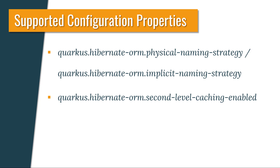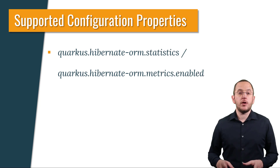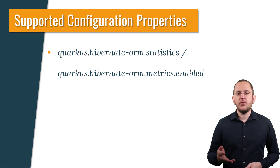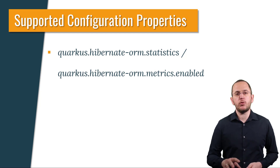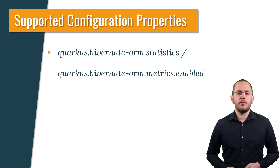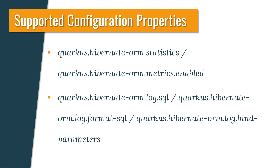quarkus.hibernate-orm.physical-naming-strategy and quarkus.hibernate-orm.implicit-naming-strategy configure the naming strategies that Quarkus shall use to map your entity classes and properties to the database tables and columns. quarkus.hibernate-orm.second-level-caching-enabled activates or deactivates Hibernate's second-level cache — it's activated by default and you only need to activate caching in your entity mapping. quarkus.hibernate-orm.statistics and quarkus.hibernate-orm.metrics.enabled define if Hibernate's statistics component is activated and if they are published using a metrics extension — deactivated by default. quarkus.hibernate-orm.log.sql, quarkus.hibernate-orm.log.format-sql, and quarkus.hibernate-orm.log.bind-parameters configure if Hibernate shall log SQL statements, format them, and include bind parameter values. Now let's get into the IDE and give it a try.